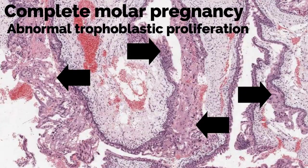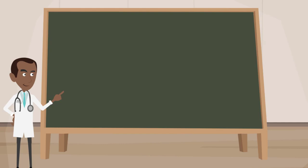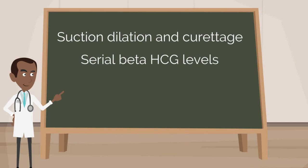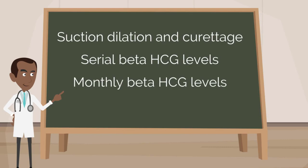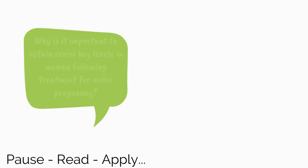Now that you understand the pathophysiology, you can discuss next steps with our patient. A suction dilation and curettage is recommended for treatment, which confirms the diagnosis of a complete mole. Following the procedure, she receives serial beta-HCG levels on a weekly basis. Once her beta-HCG normalizes, monthly beta-HCG levels are recommended. Why is it important to obtain serial beta-HCG levels in women following treatment for molar pregnancy?